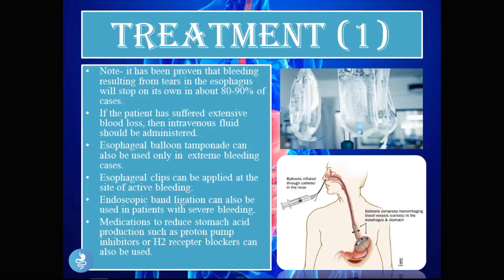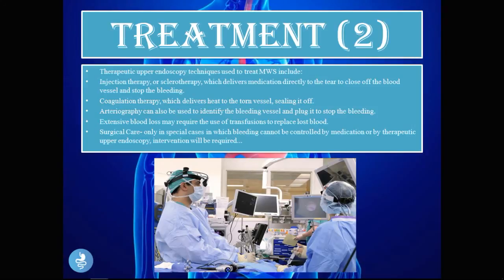Esophageal clips can be applied to the site of active bleeding. Endoscopic band ligation can also be used in severe cases. Medications to reduce stomach acid, such as proton pump inhibitors or H2 receptor blockers, may be used. Therapeutic upper endoscopy techniques include injection therapy or sclerotherapy to close the blood vessel, coagulation therapy to seal the torn vessel with heat, and arteriography to identify and plug the bleeding vessel. Extensive blood loss may require a transfusion, and surgical care is only required when bleeding cannot be controlled by medication or endoscopy.